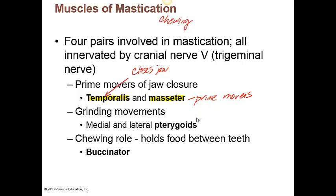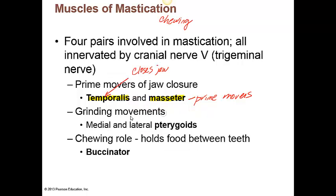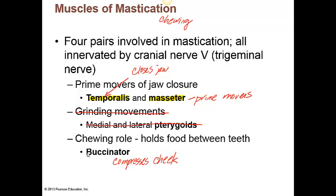Then we have the pterygoids, which are important for grinding — but these are two of the specific muscles you don't have to worry about; you are not going to be responsible for the pterygoids on the test. We do have the buccinator muscle. The buccinator is going to be important for compressing the cheek; it helps to hold food between the teeth and keeps food between the grinding surfaces of the teeth. Remember earlier in the semester you learned where the buccal cavity is — that vocabulary is going to help you learn the names of these muscles.